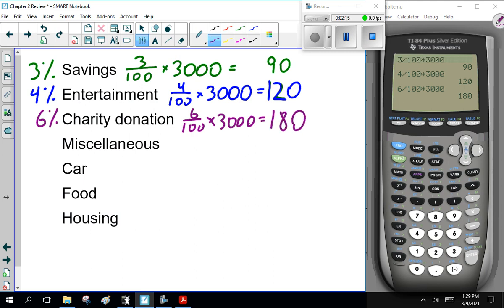Now, I'm going to pause it. I want you guys to calculate the rest. Miscellaneous is 13%, car is 16%, food is 20%, and housing is 38%. So get these calculations, come back and compare them with me, okay?